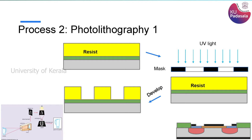Then you take this wafer into a solution called developer — this process is called developing. When you develop and dry, the areas where light has fallen will go away and the remaining areas will stay. So you have created islands or protected areas where you can protect your oxide below these islands. That is the entire reasoning behind this photolithography process.